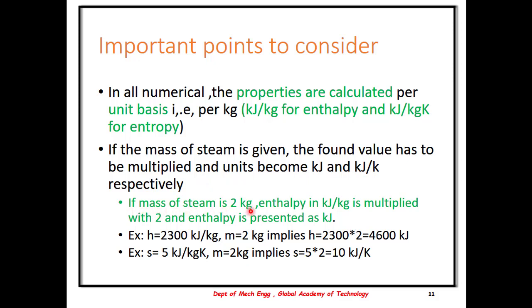For example, if the mass of steam is 2 kg and the enthalpy from the table is read as 2300 kJ per kg, then the final enthalpy becomes 2300 into 2, that is 4600 kJ. And if entropy is read as 5 kJ per kg Kelvin, the final entropy becomes 5 into 2, which is 10 kJ per Kelvin. If the mass of steam is not given, it is understood that we are calculating properties on a unit basis.